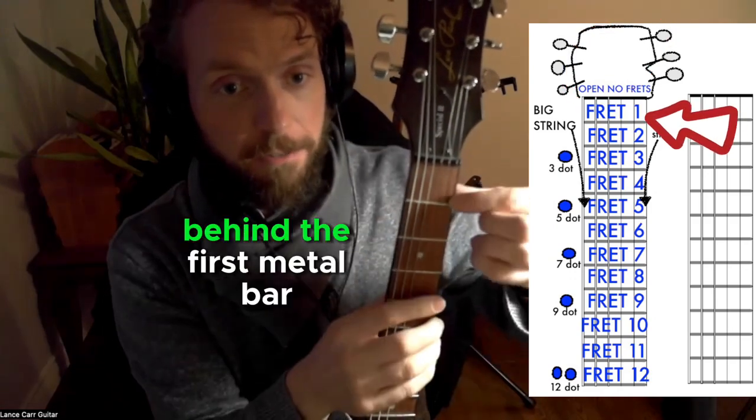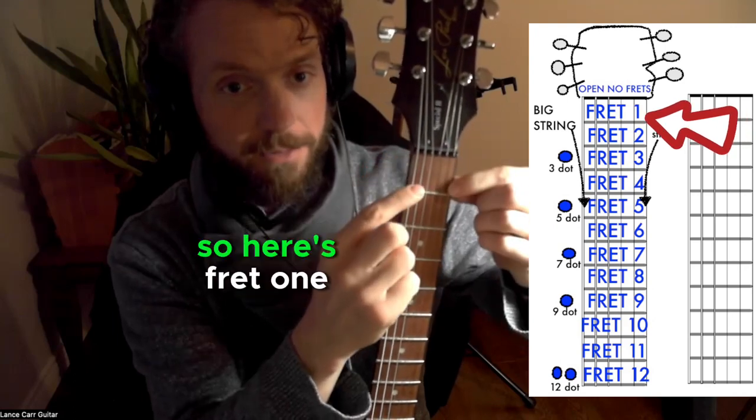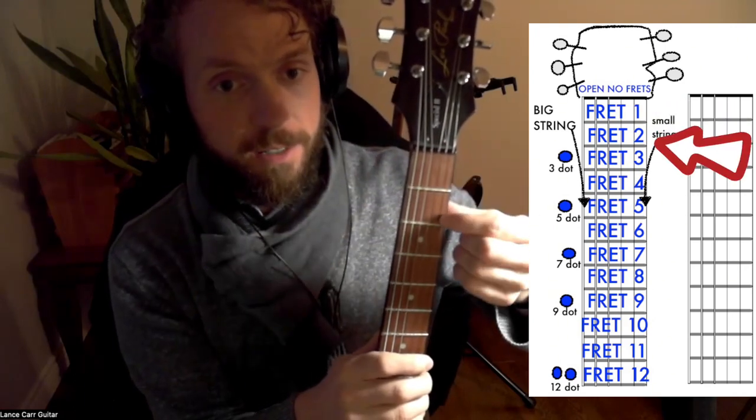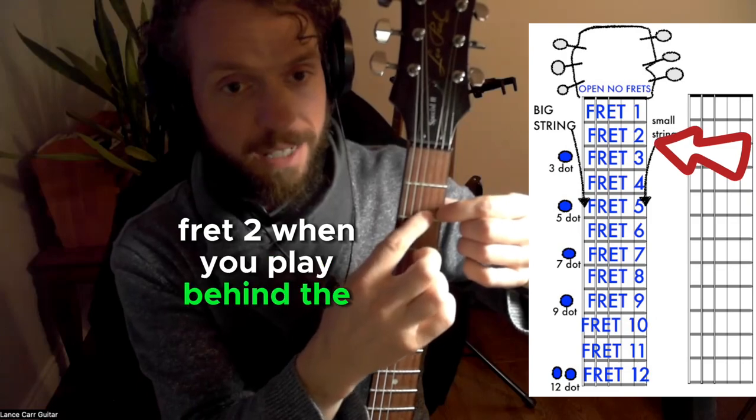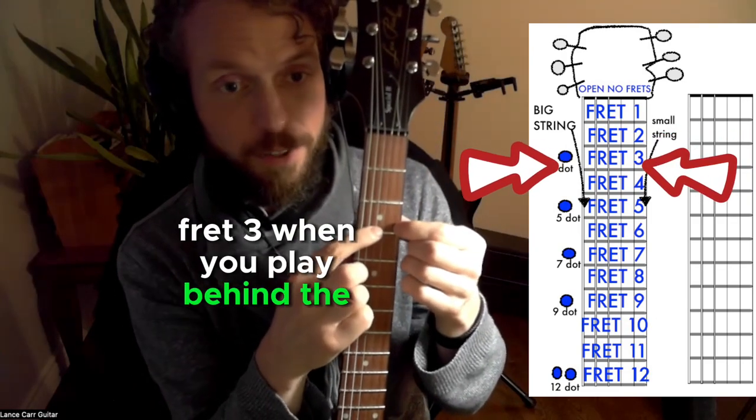When we go behind the first metal bar, that's our first fret. This is not the first fret, so here's fret one, fret two when you play behind the second metal bar, fret three when you play behind the third metal bar.